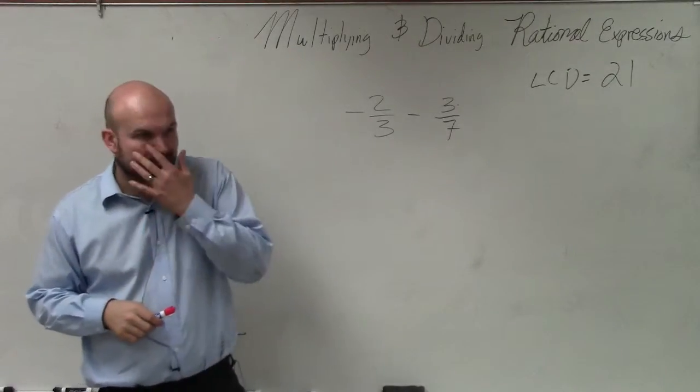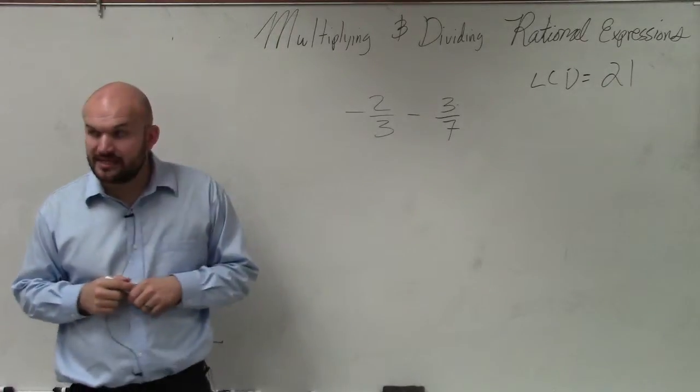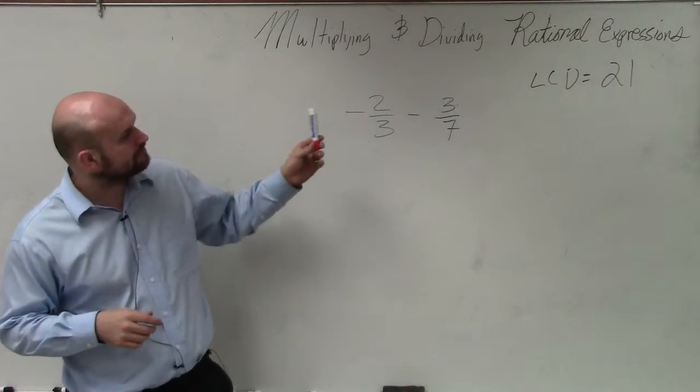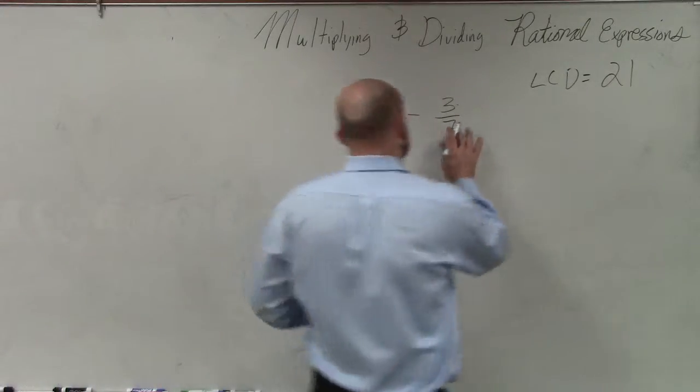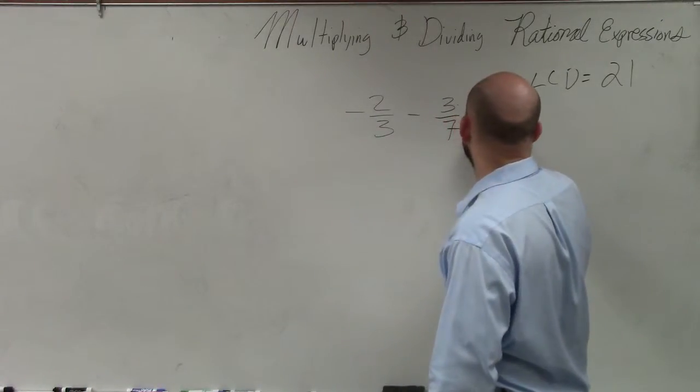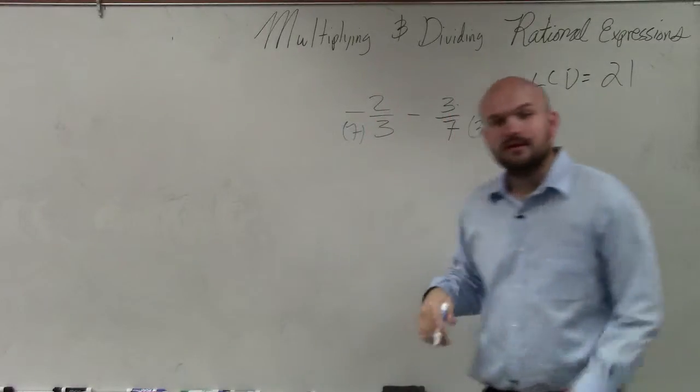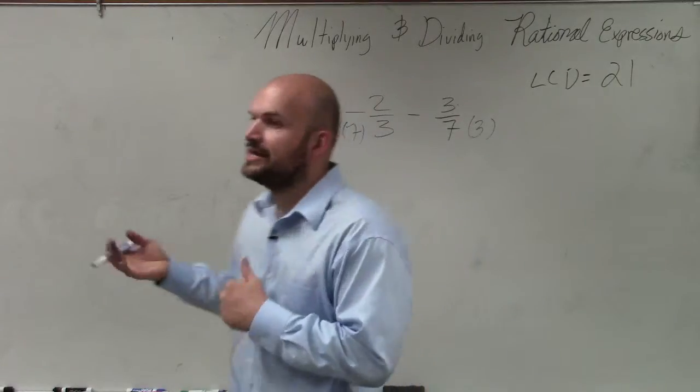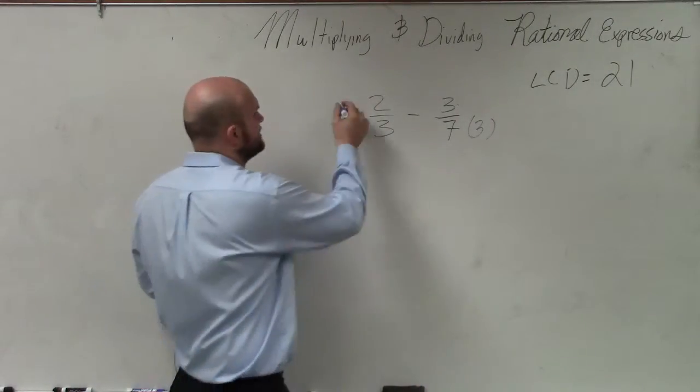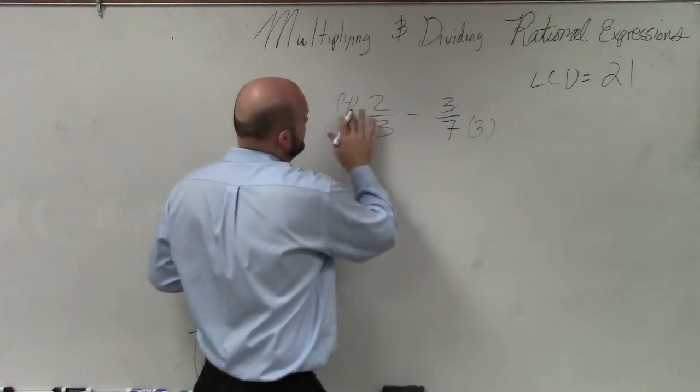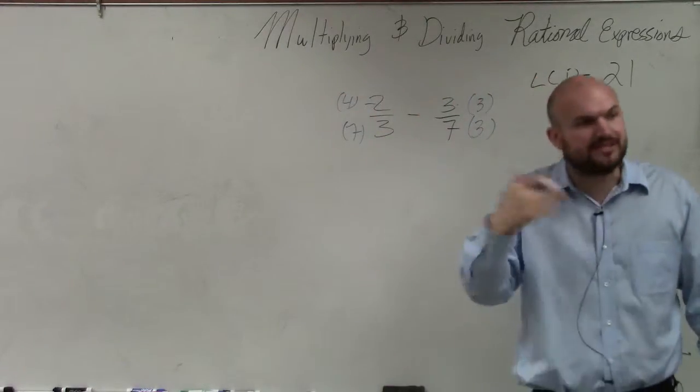So now basically what we're going to do for this case is we need to get both of these to be the denominator. So to get 7 to be 21, I need to multiply by 3. And to get 3 to be 21, I need to multiply by 7. Now we can't just multiply our denominators by a number and not multiply the numerators because that would change the value. We need to make sure we multiply the same number up top and on the bottom to produce what we call equivalent equations.